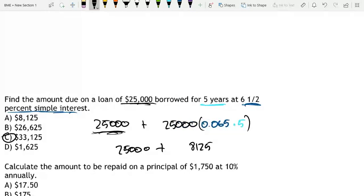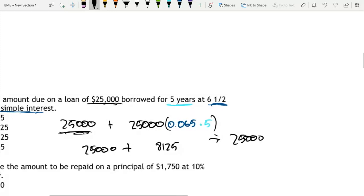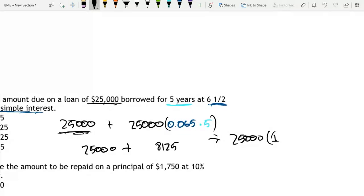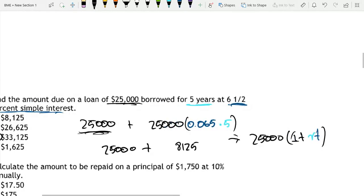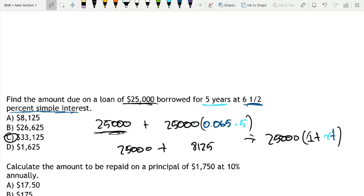A quicker way to do this instead of writing it out like this is this is the same thing as writing 25,000 times 1 plus our rate. Wow, I did rate. I was nearly doing compound interest. Plus our rate times our time. We could have also just written the equation in this manner. Like this rate times time because we're having the rate at 0.065 and over 5 years. This would work as well.